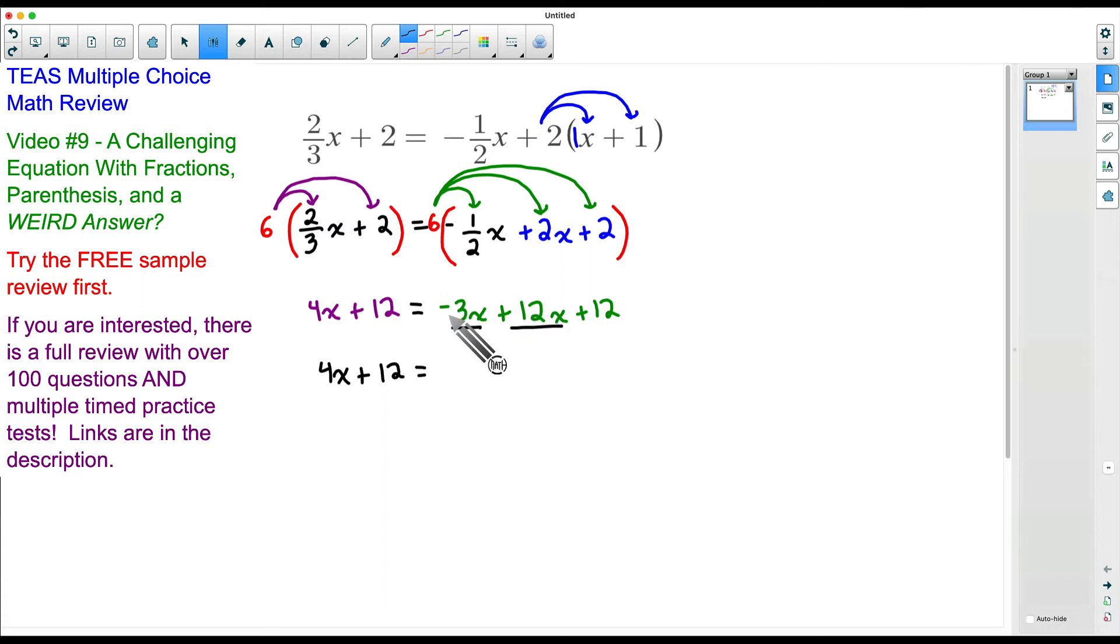Negative three x plus twelve x. Watch your signs. Negative three plus twelve, that is a positive nine. Do not forget your x. And then we have our plus twelve that we're going to bring down. Now we still have multiple options here. Some students prefer to move the x to the left hand side. Some students prefer to move the smaller to the bigger. Honestly, it doesn't matter. I'll tell you what I'm going to do here. I'm going to move that 9x on the right hand side. I'm going to move that to the left hand side.